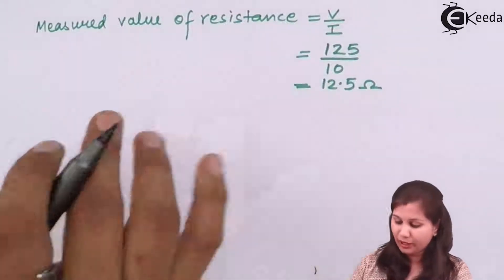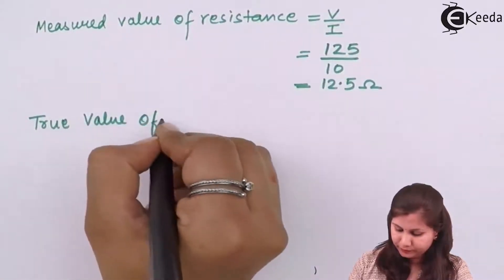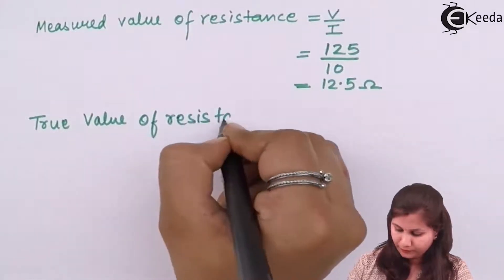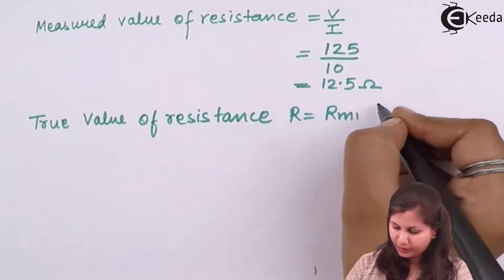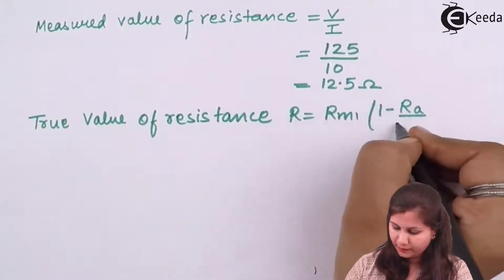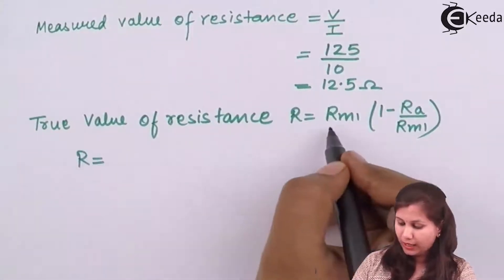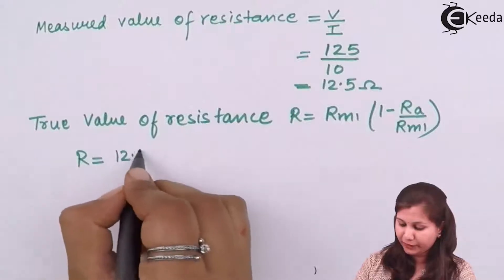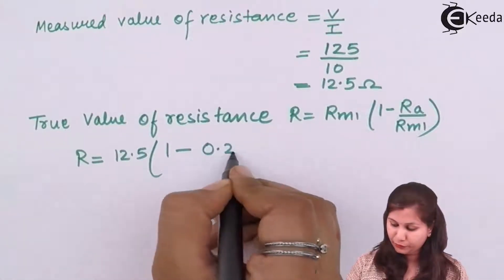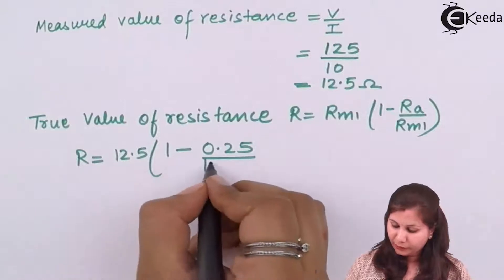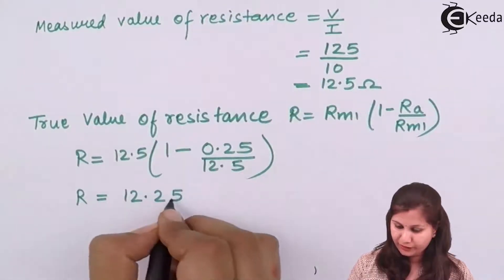Now we have to calculate the true value of the resistance. The formula for true value is R equals Rm times (1 minus Ra divided by Rm). Substituting values: R equals 12.5 times (1 minus 0.25 divided by 12.5), giving a true value of resistance equal to 12.25 ohms.